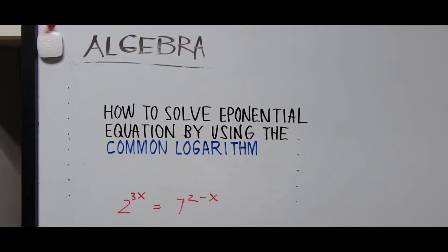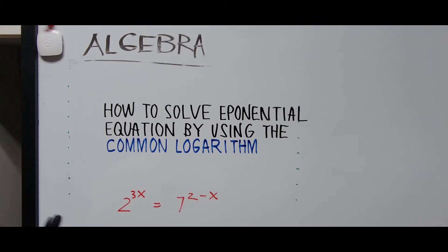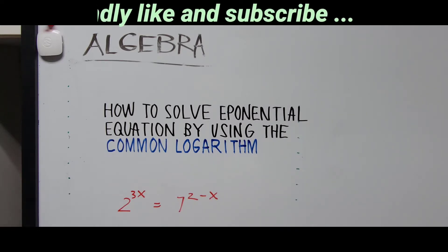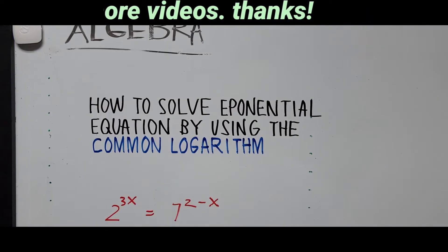Good morning or good evening everybody, this is Cassiano. Our video for today is how to solve an exponential equation by using the common logarithm. The problem here is 2 raised to the 3x equals 7 raised to the 2 minus x. Thank you for helping me make more videos by subscribing to my channel, and for those new to my channel, I'd also like to say thank you if you can subscribe.